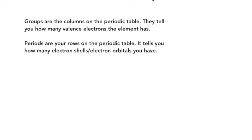So in summary, groups are the columns of the periodic table. They tell you how many valence electrons the element has, whereas your periods are the rows on the periodic table, and they tell you how many electron shells or electron orbitals you have.